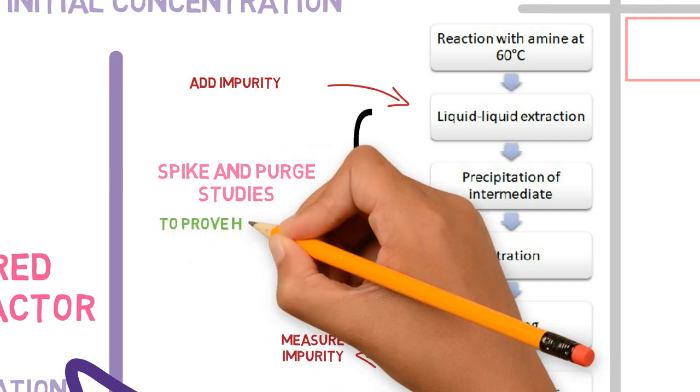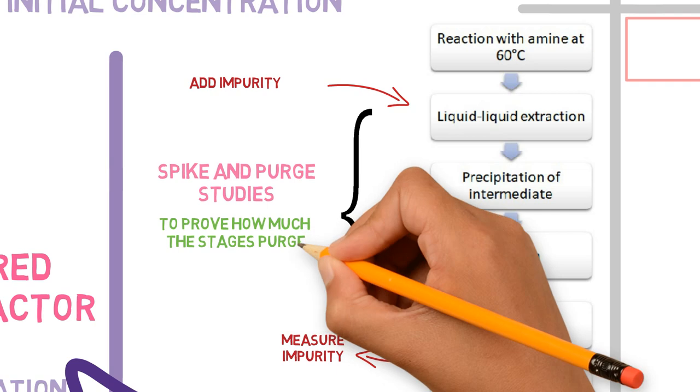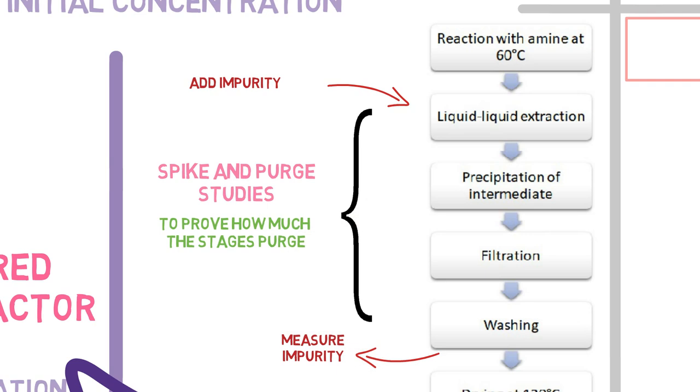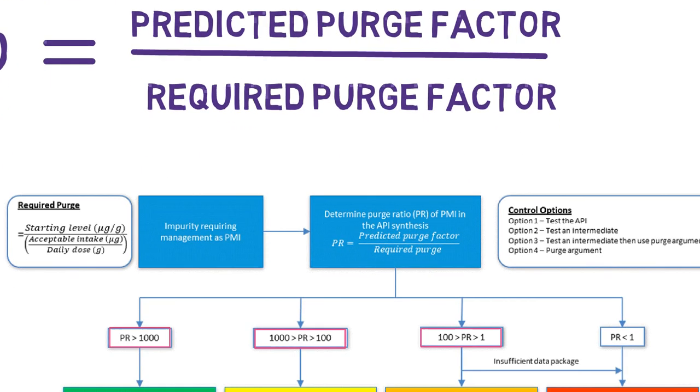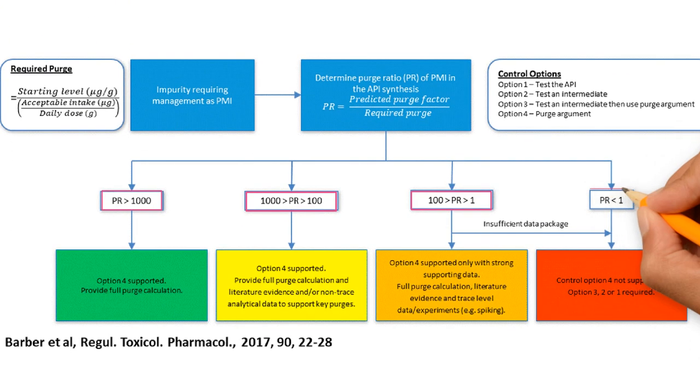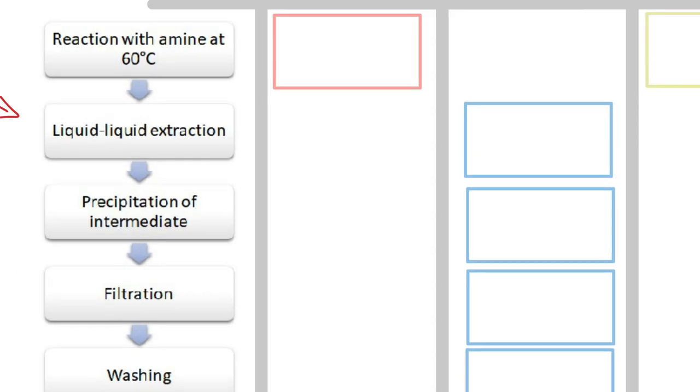This is the best way to prove how much the process purges an impurity, especially because the purge factor calculations without experimental data are highly conservative. And if the value is below 1, it means that option 4 is probably not the best control strategy, and one of the other options presented in ICH M7 should be used: 1, 2, or 3. So let's see an example.